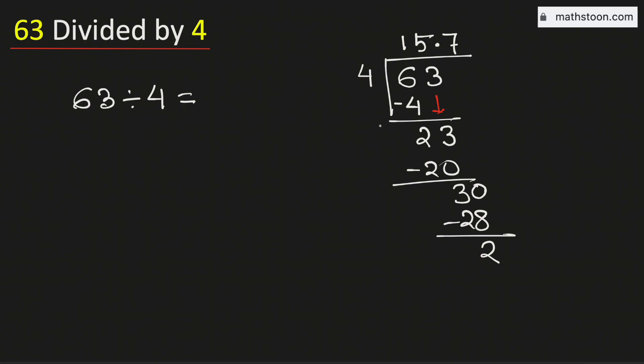Again 2 is less than 4 so we will again borrow 1 0 and we know that 4 times 5 is 20, subtract we get 0.